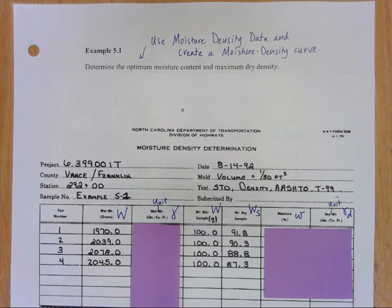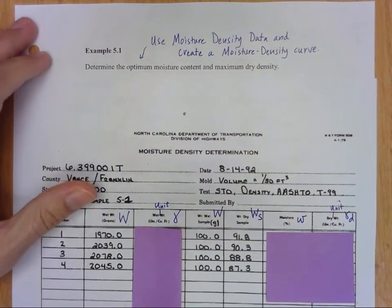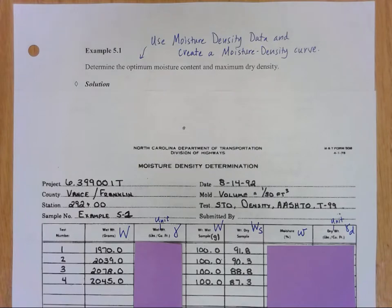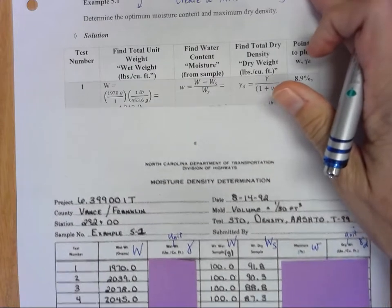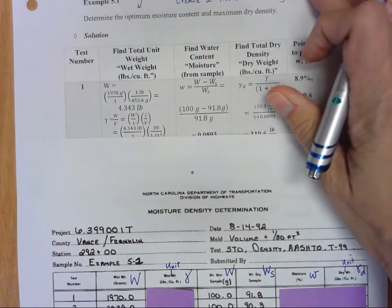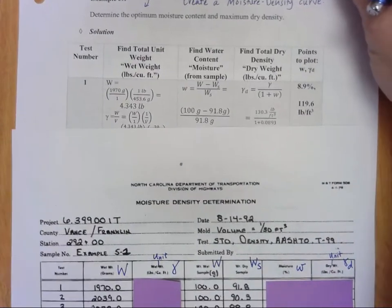Okay, so if you turn to your next page you'll see underneath the example I've got the solution here so we'll go over that while looking at this table here. You can look at these both together so let's take a look at test number one.